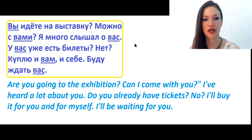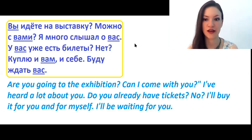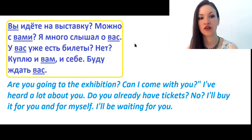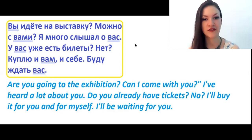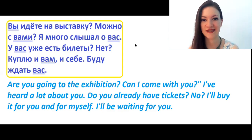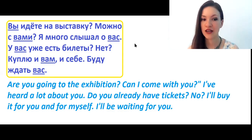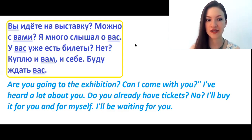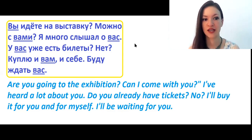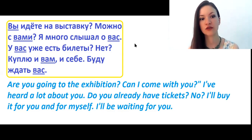Можно с вами — can I come with you? We use the preposition с, and after с meaning 'with' goes instrumental. Note that с is a tricky preposition: it can also mean 'from' when talking about time — for example, со следующей недели (from next week) — and in that case it goes with genitive. But when it means 'with,' it goes with instrumental.